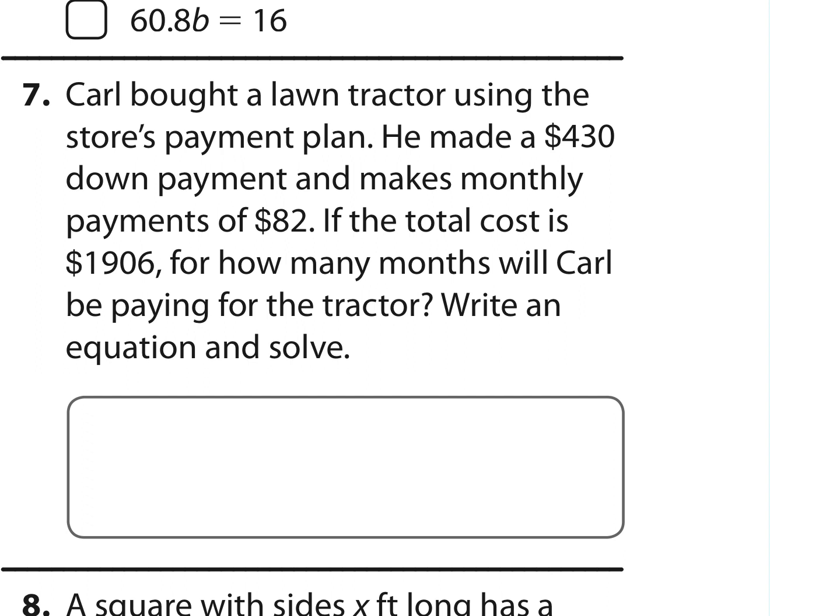So I notice he is making a down payment of $430. He pays that one time, plus he is making monthly payments of $82. He is doing that for every month, M. And the total cost is $1,906.